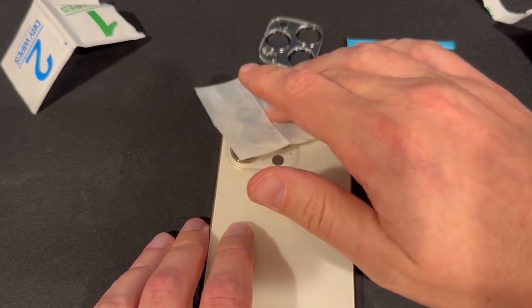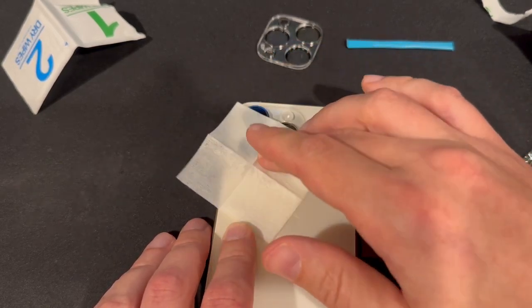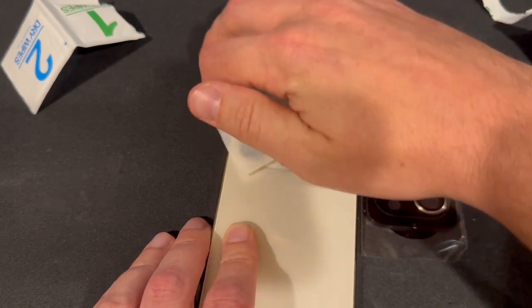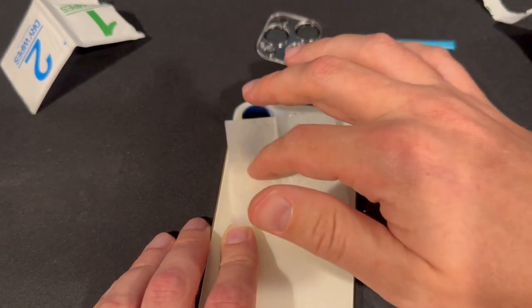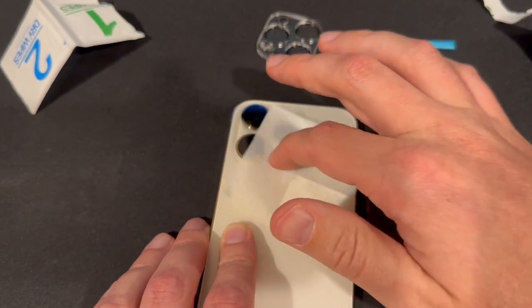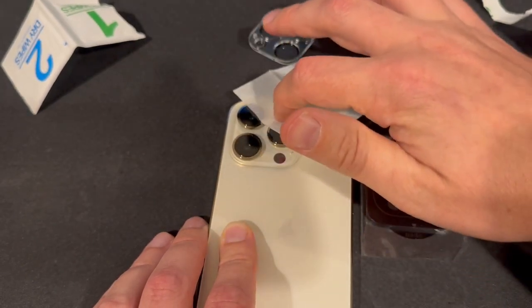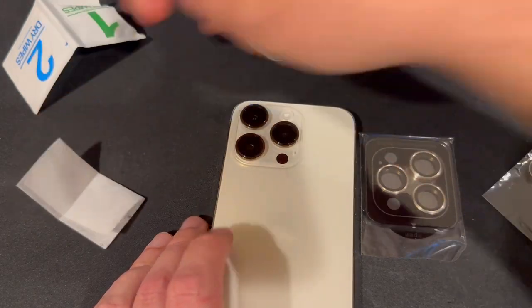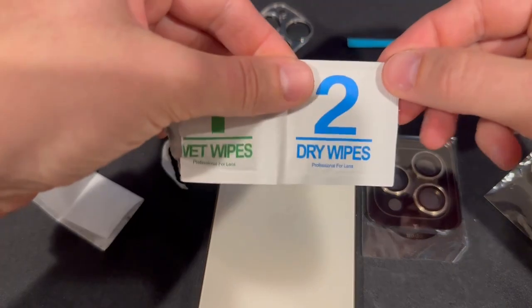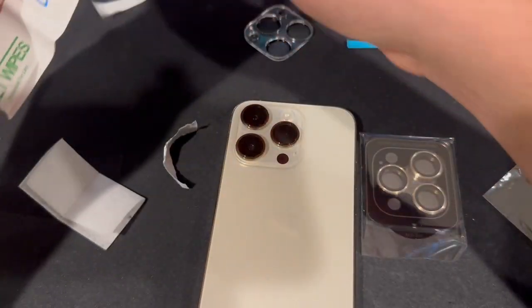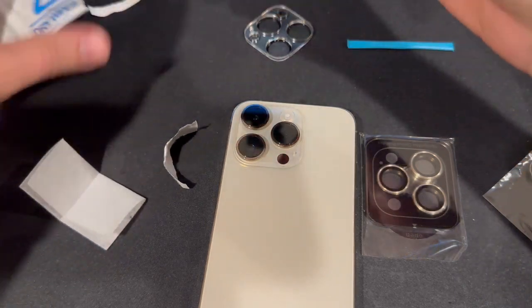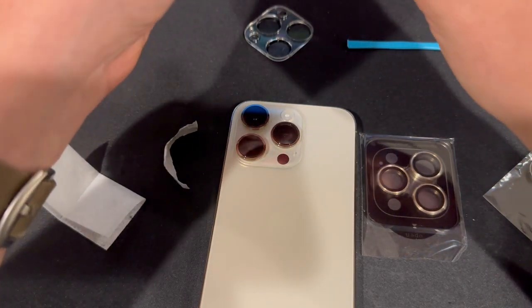We're going to be careful not to touch it with our fingers. We're also going to try and get the area around the lens because that's where the new adhesive is going to have to stick. Wet wipe complete. Now we're going to do step two, dry wipes, and we're going to dry whatever that wet stuff was off.